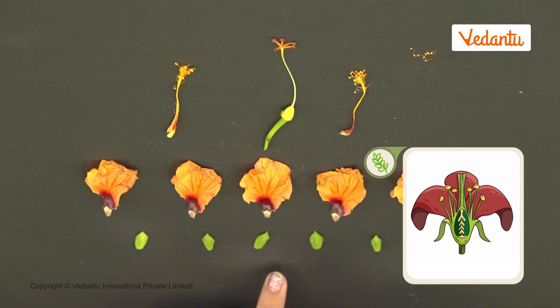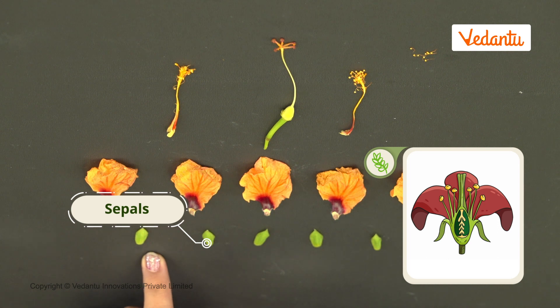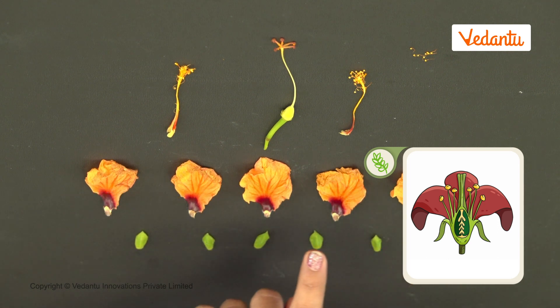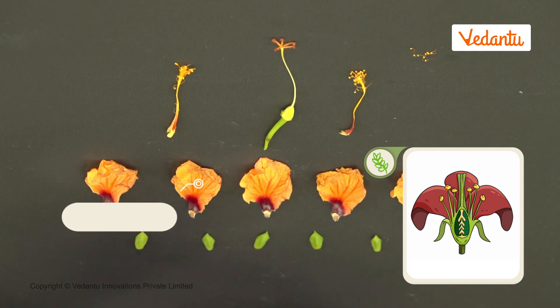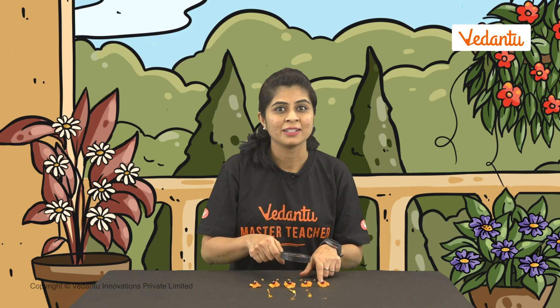This leaf-like part on the outside is called the sepal. This colorful part here is the petal. It is usually the most prominent part of the flower.